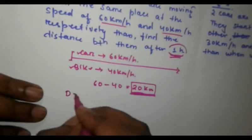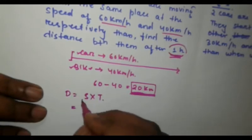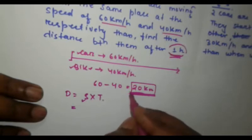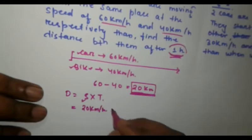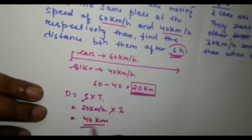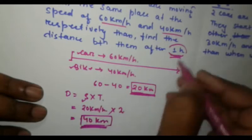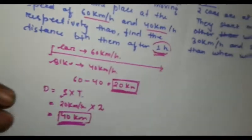As we know distance equal to speed into time, so the relative speed is 20 km per hour and time is 2 hours. So, the distance would be 40 km. After two hours, they would have been 40 km apart and after one hour, they are 20 km apart. Now, let's take another example.